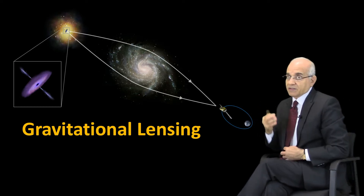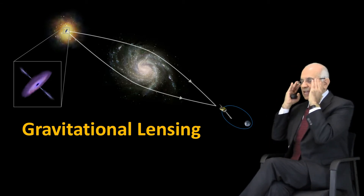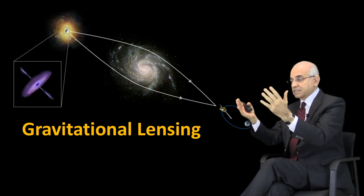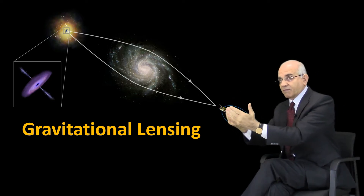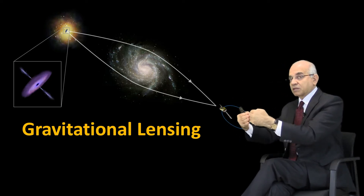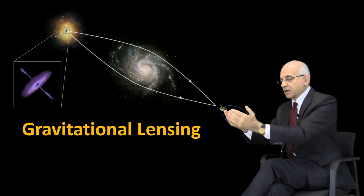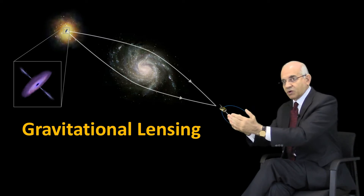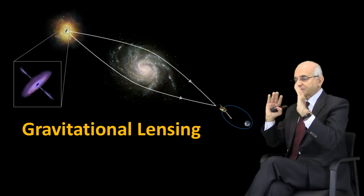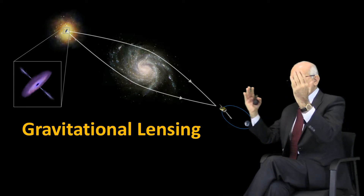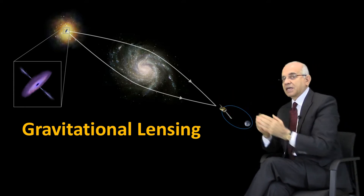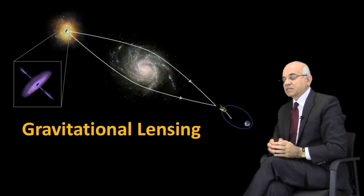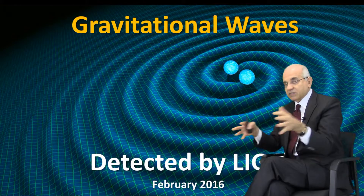That's gravitational lensing. It acts like a lens because it bends or curves space, so light coming from far-away stars blocked by the galaxy will actually appear to us — we'll be able to see it simply because it is curved around the galaxy, because the space around the galaxy was curved by the gravitational mass of the galaxy.